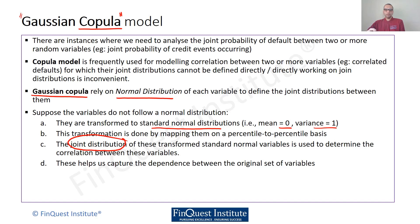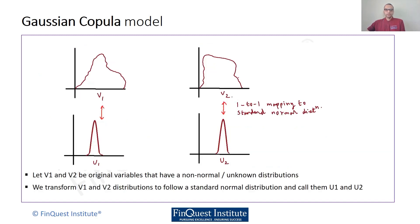The transformation is done by mapping a percentile to percentile. The overall joint distribution of these transformed standard normal variables will be used to determine the correlation between them, because finally we are interested in the idea of correlated defaults. This will also help us capture the dependence between the original set of variables. You can switch back and forth between the original variables and the transformed ones — that's the beauty of the copula setup.